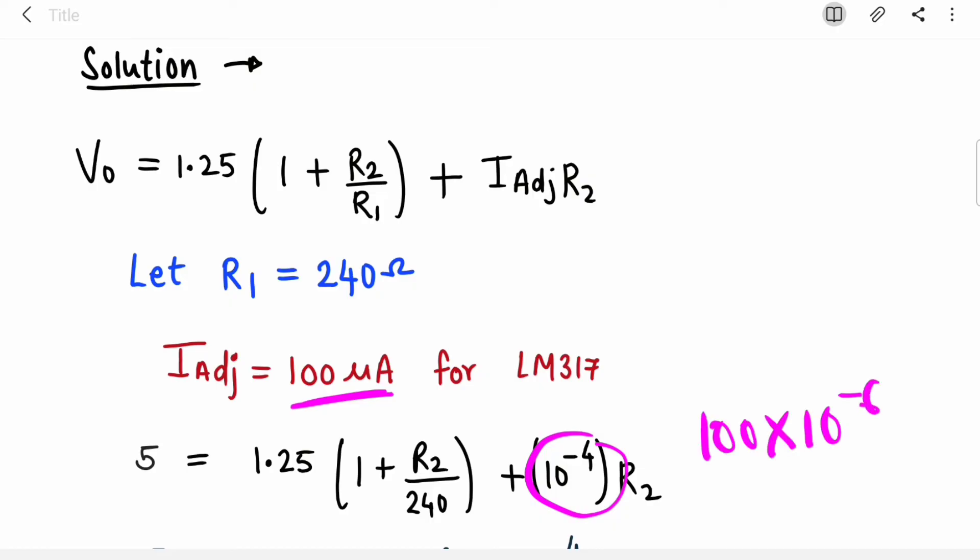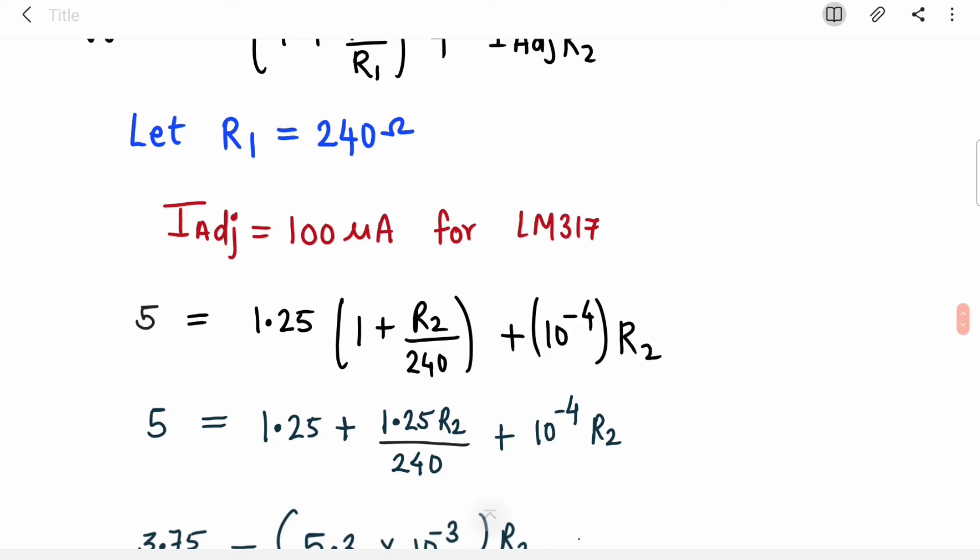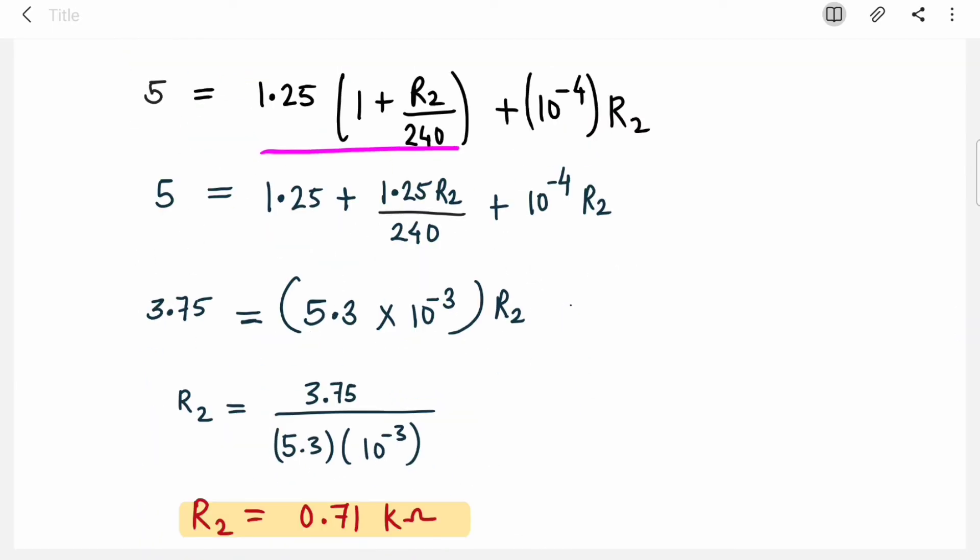I substituted 10^-4, which is 100 microamperes, and R1 is 240. For Vo, first I'm trying to find the value of R2 for 5 volts, then I'll repeat this process for 12 volts. I just expanded the bracket.